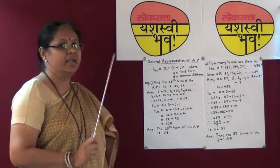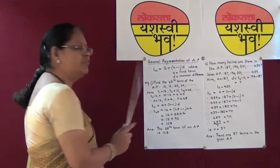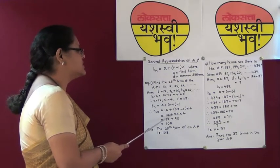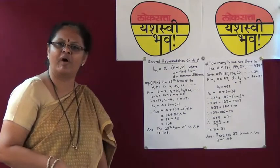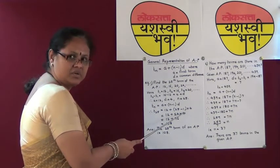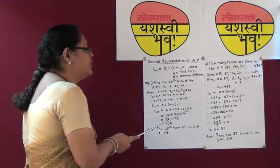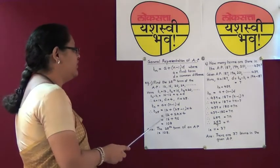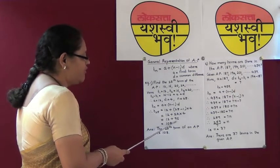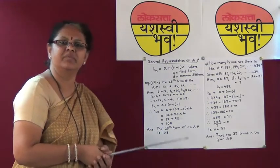Students, be careful of a common mistake here: do not add 24 with 12 first to get 36 and then multiply by 4 — that gives the wrong answer. The right hand side has two terms separated by the plus sign: 12 is the first term and (25 minus 1) into 4 is the second term. So we get 12 plus 24 into 4, which gives 96, and 96 plus 12 gives 108. The 25th term of the given arithmetic progression is 108.